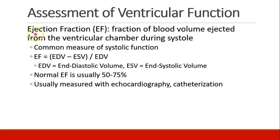One of the factors we want to talk about is the ejection fraction. The ejection fraction is the fraction of blood volume that is ejected from the ventricular chamber during systole. The heart doesn't normally eject 100% of its contents with each beat — it only ejects a fraction, and this is a common measure of systolic function. It's the end diastolic volume minus the end systolic volume, divided by the starting end diastolic volume. A normal EF is usually in the range of 50 to 75%.